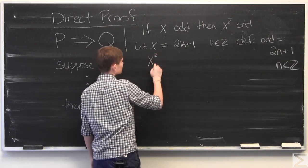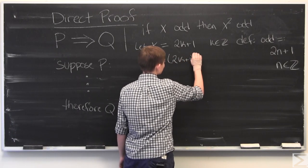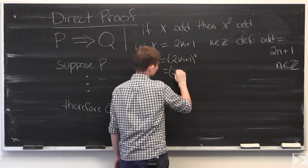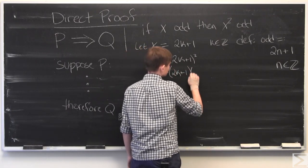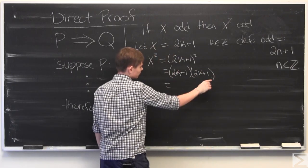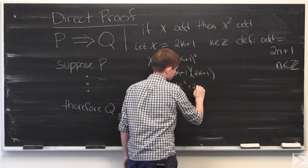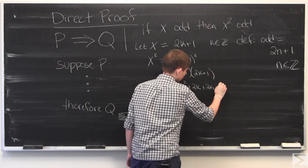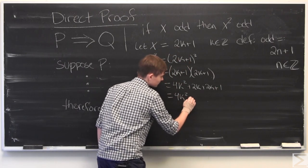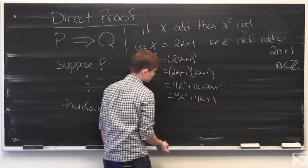Then we go X squared, which is 2k plus 1 squared, which by the notation of squaring you multiply it by itself. We will FOIL this out to get 4k squared plus 2k plus 2k plus another 2k plus 1, and we will simplify that to get 4k squared plus 4k plus 1.